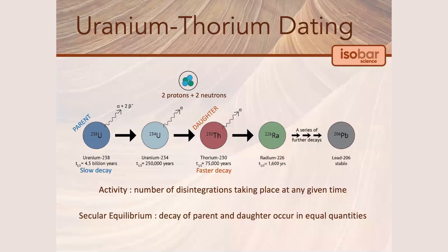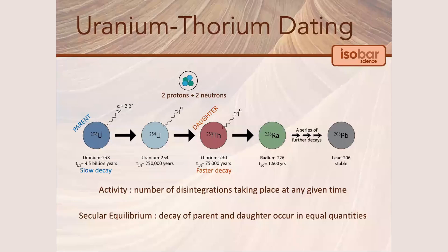The parent nuclei, such as uranium-238, at the top of the decay chain has a much longer half-life than all of the intermediate nuclei. As a result, the radioactivity of the parent nuclei slowly decays while the daughter is being produced at a higher rate. Eventually, the quantity of parent decayed and daughter produced will occur in equal quantities, producing what we call secular equilibrium.